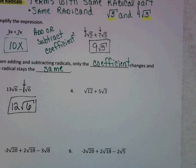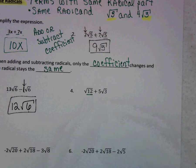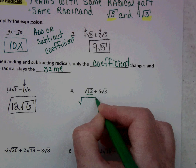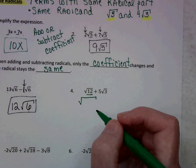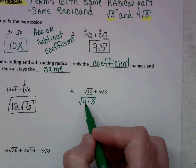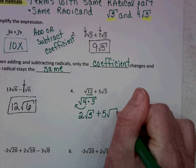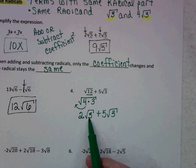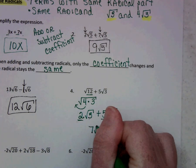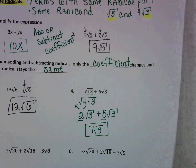On number 4, we don't have like radicals. But is the square root of 12 in simplest radical form? No it is not, so that's the first thing we need to do. Remember, we think of perfect square factors of 12 — that would be 4 times 3. The square root of 4 comes out as 2, giving us 2 times the square root of 3, plus 5 times the square root of 3. Now we do have like radicals, so 2 plus 5 is 7 times the square root of 3. If you don't have like radicals to begin with, look at what you can simplify first.